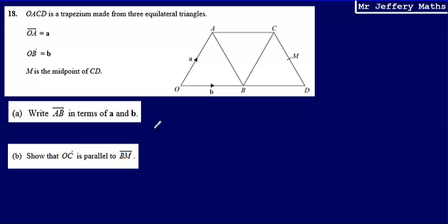This is question 18. OACD is a trapezium made from three equilateral triangles. OA is equal to a, OB is equal to b, and M is the midpoint of CD, so M is halfway between C and D.